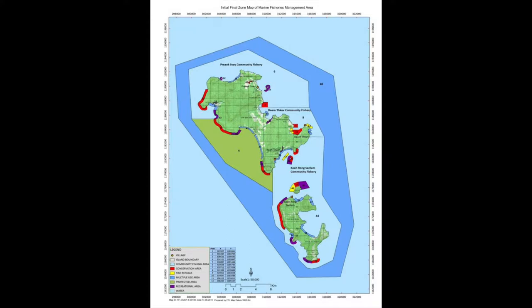When the Marine Fisheries Management Area was declared, it brought all of this buffer zone into the MFMA boundary. This green protected area only allows family-scale fishing, and then there's also another zone called recreational areas, which only allow scuba diving and snorkelling — no fishing is allowed in these sites.